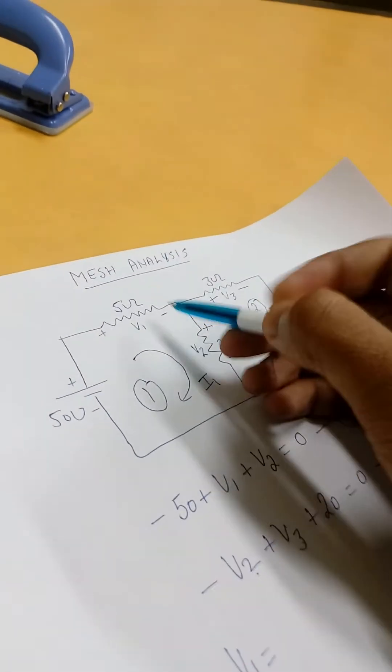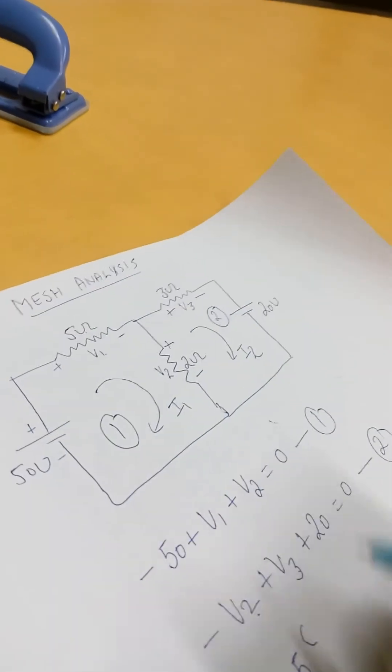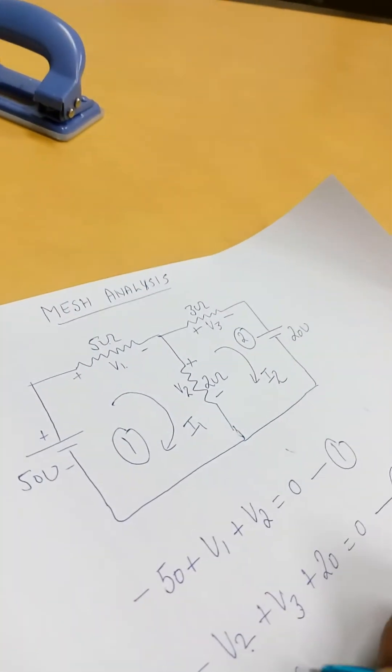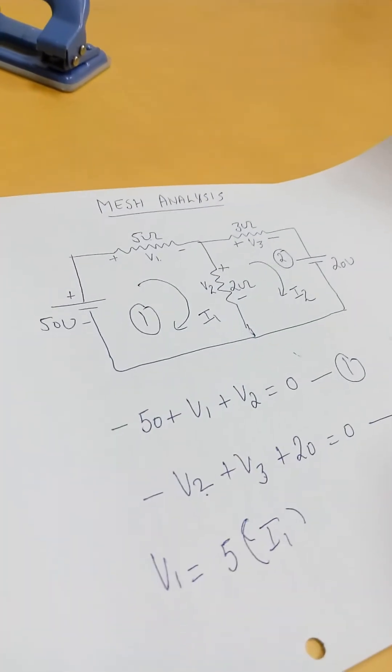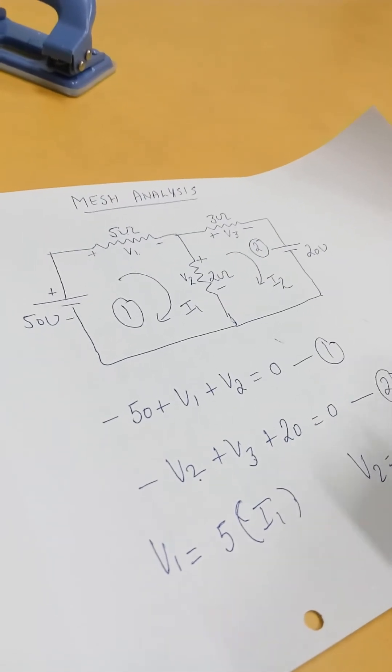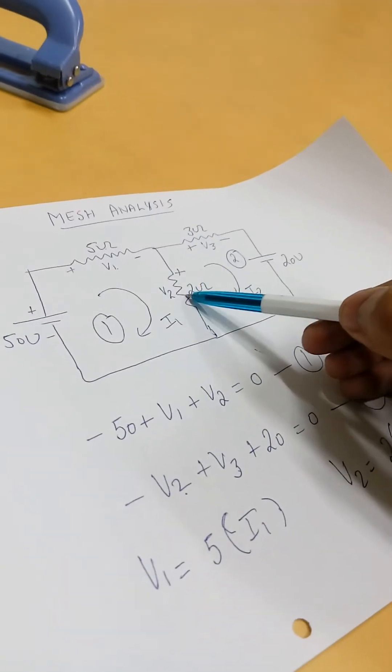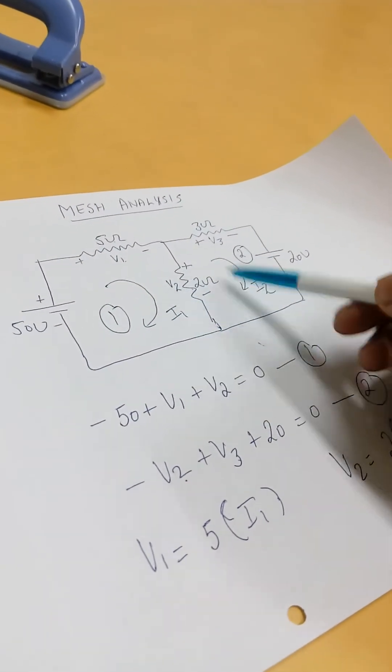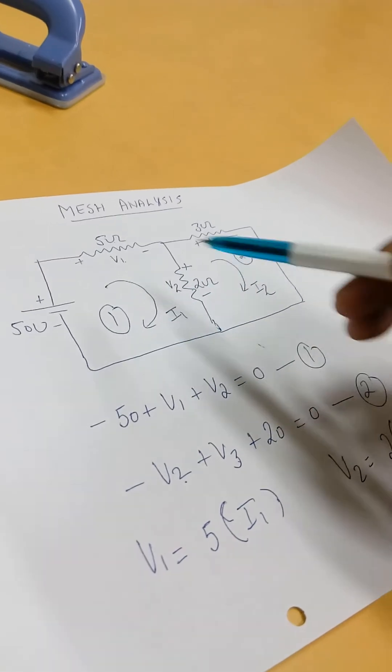Now V1 will be resistance of 5 ohms, current is I1, so this is 5 into I1. And V2, the resistance is 2 here. This resistance is shared between two loops, loop number one and loop number two. In this loop the current is going positive to negative, but in this loop current is going negative to positive.